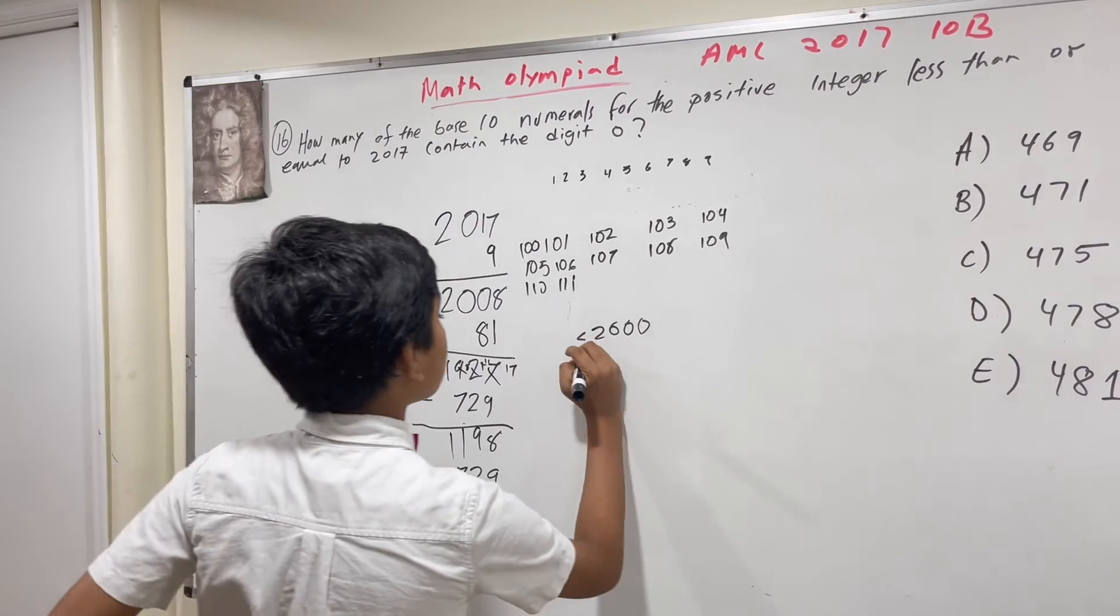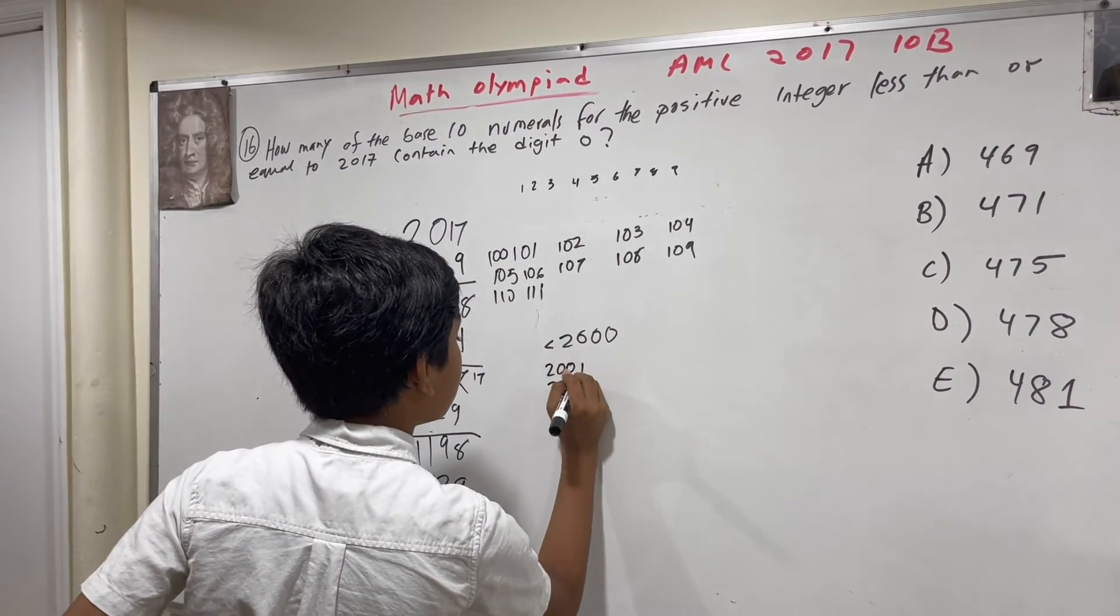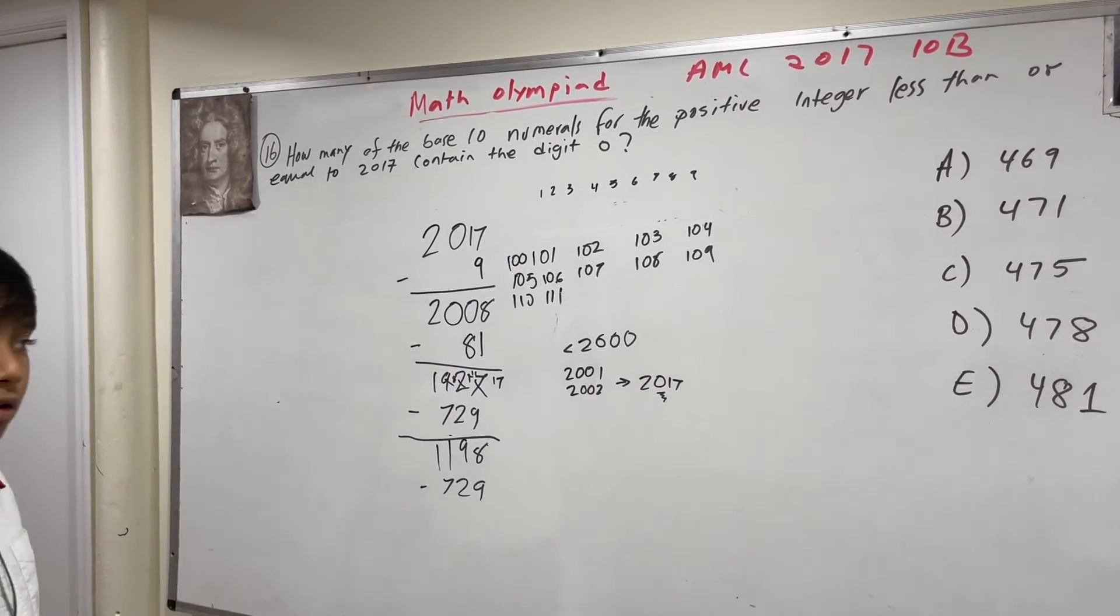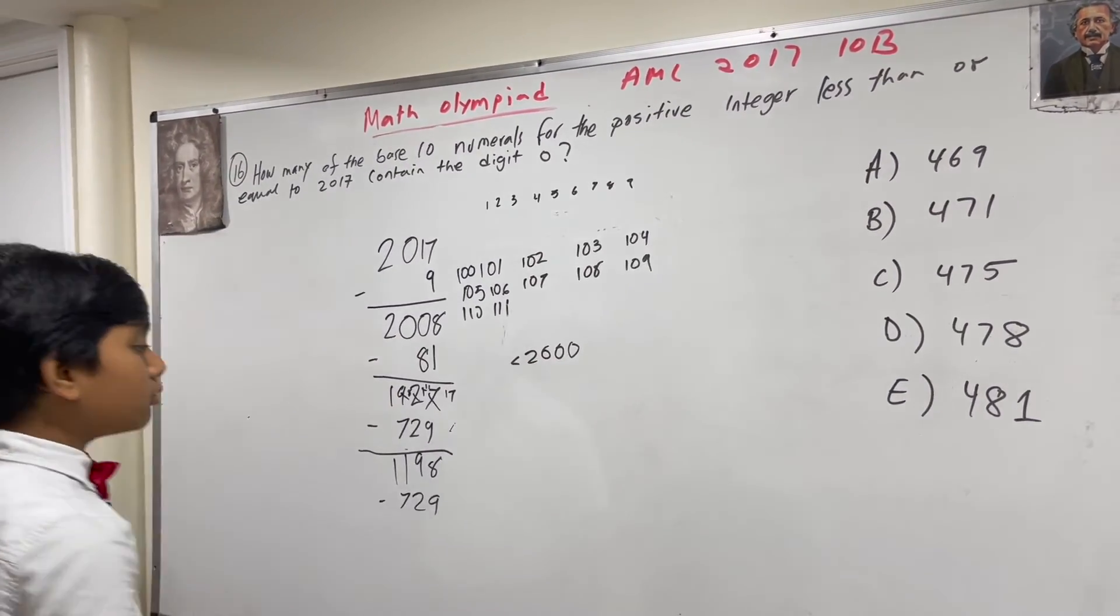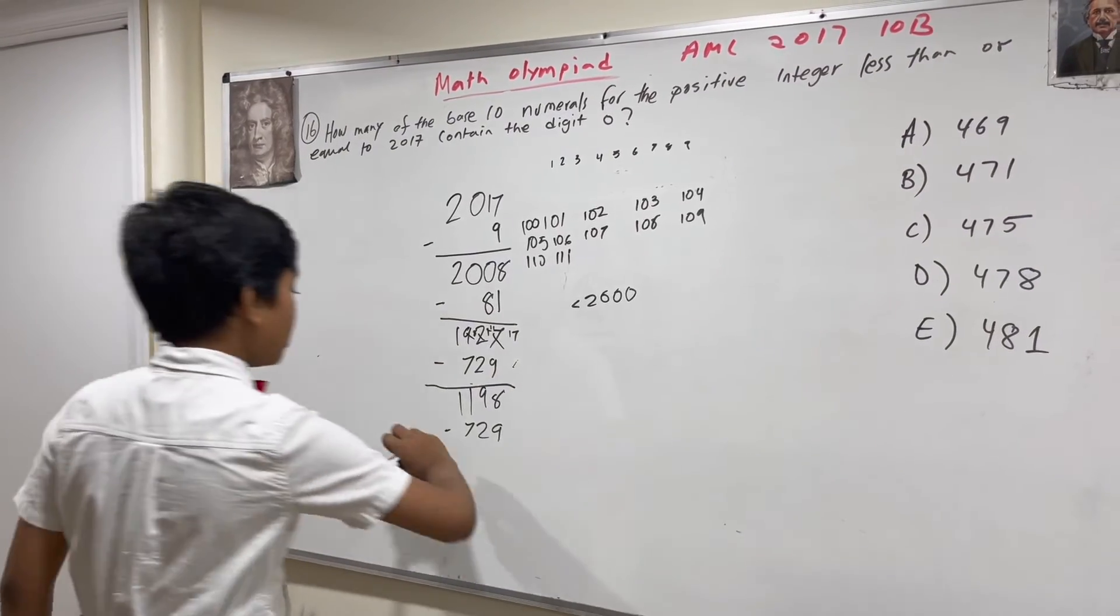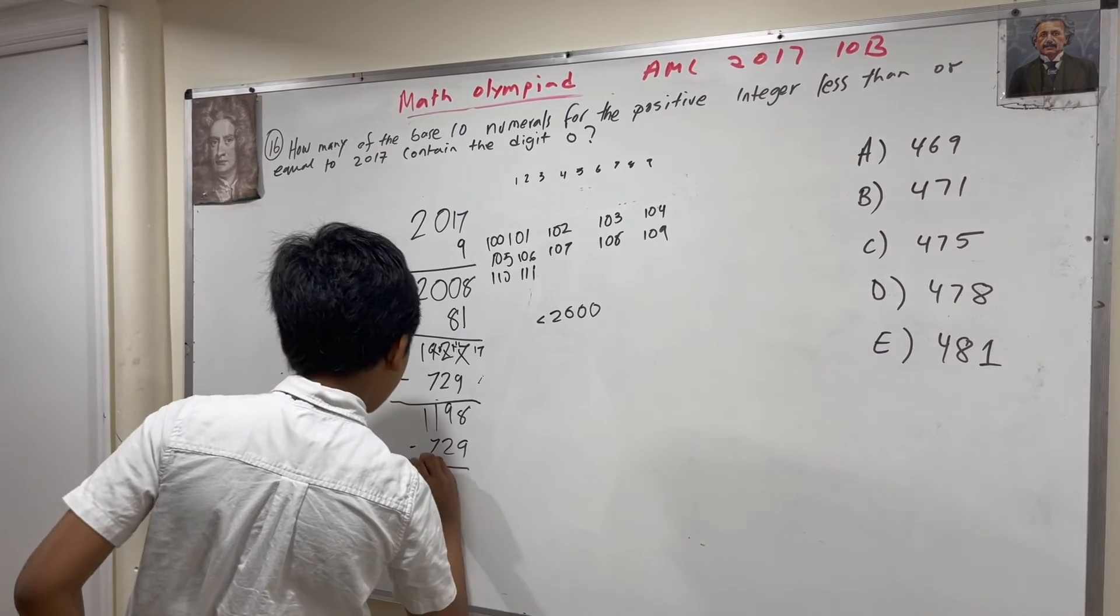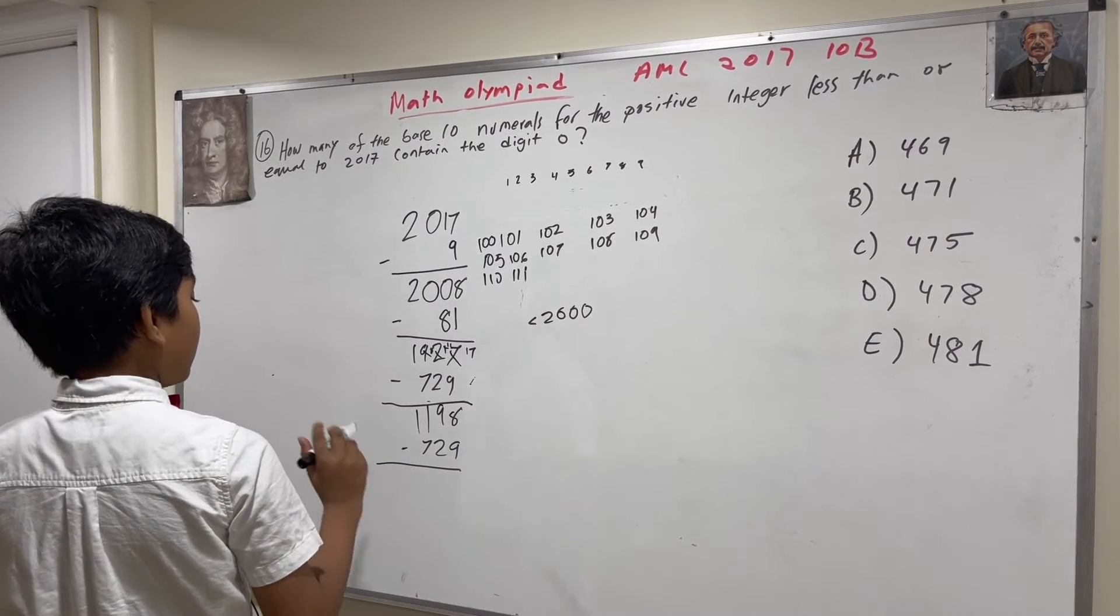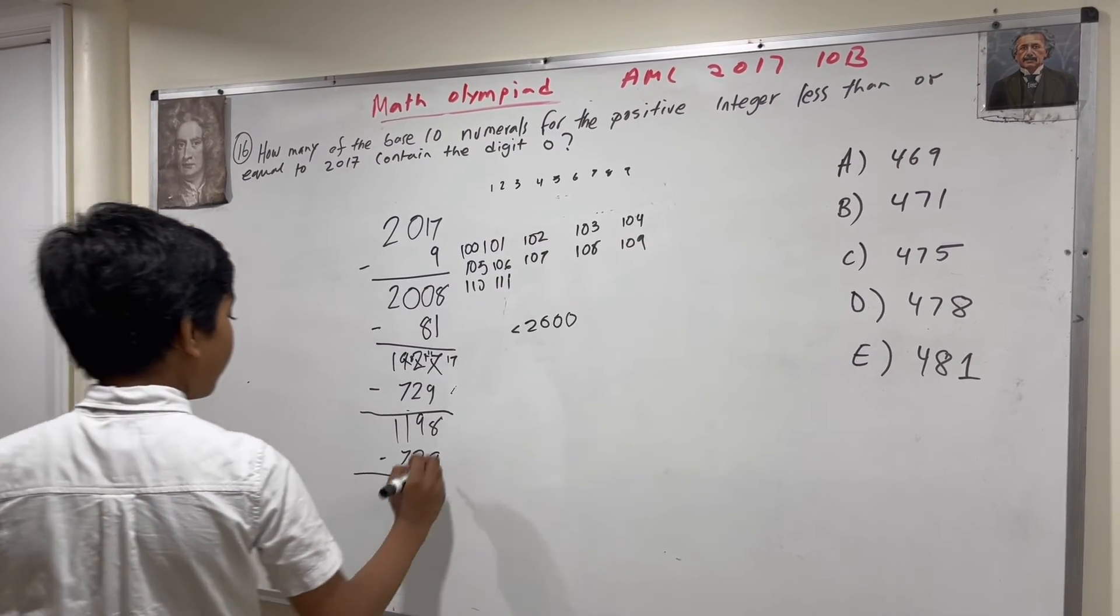Because, remember, all those greater than 2,000 are, for example, 2001, 2002, all the way to 2017, which still has a 0 in it. So, that will not work. Think about it. Every single number there, except these 729, have a 0.